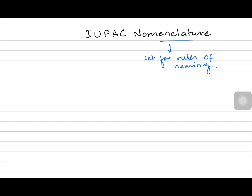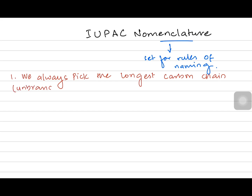Let's try those rules first and then see what they mean. The first rule is we always pick the longest carbon chain, which has to be the unbranched chain. Then we name the branches first — we also call the branches 'substituents.'